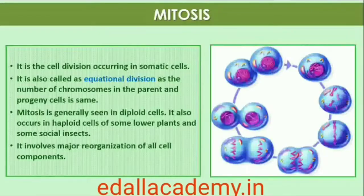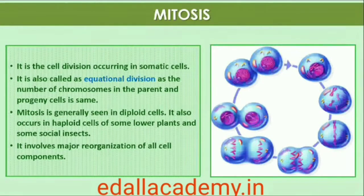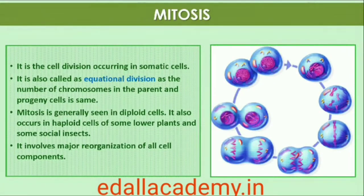In animals, mitotic cell division is only seen in the diploid somatic cells. Against this, plants can show mitotic divisions in both haploid and diploid cells. From your recollection of examples of alternation of generations in plants, identify plant species and stages at which mitosis is seen in haploid cells.